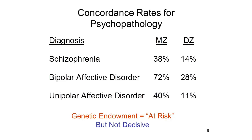For schizophrenia, if you have an identical twin who has schizophrenia, that more than doubles your risk of having schizophrenia yourself. More than doubles your risk if you have an identical twin with bipolar affective disorder. And more than triples your risk if you have an identical twin with unipolar affective disorder. So the fact that monozygotic twins are more concordant for psychopathology than dizygotic twins is prima facie evidence for a genetic contribution to these forms of mental illness. But the MZ concordance rate is far from 100%, far from perfect.